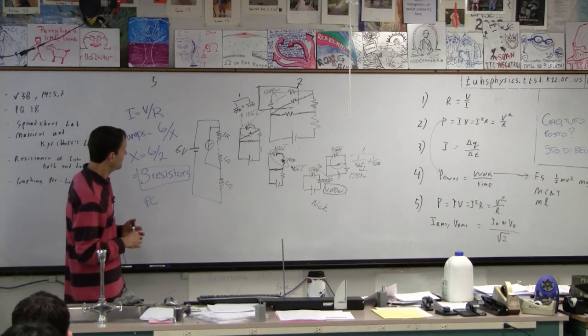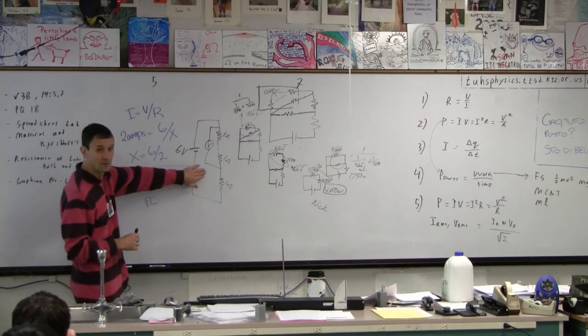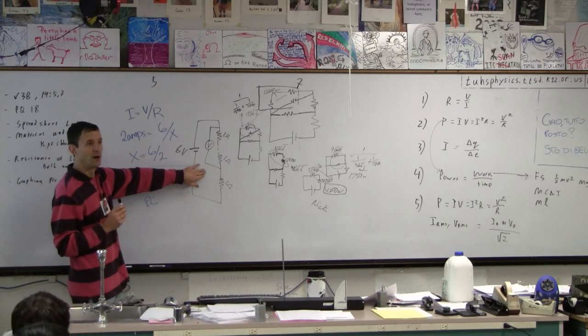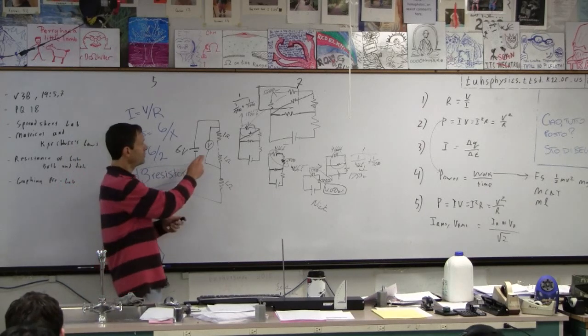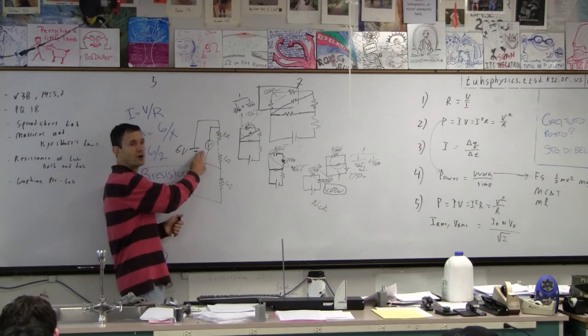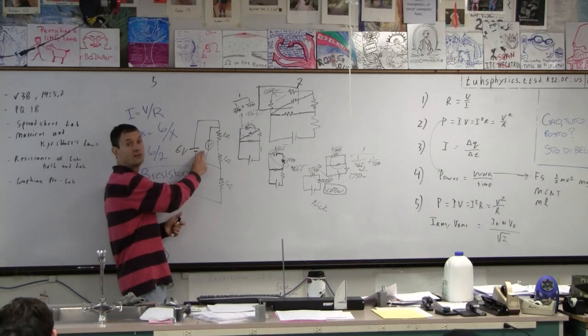Okay, but there we have it, right? This is called, by the way, a voltage divider, and the trick about voltage dividers is that, remember that voltmeters don't draw much current, because they have a resistance of infinity, yeah?